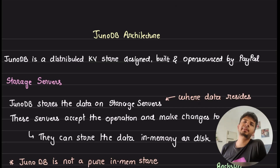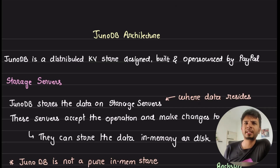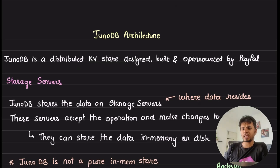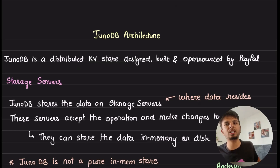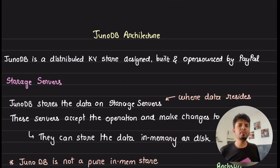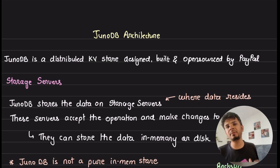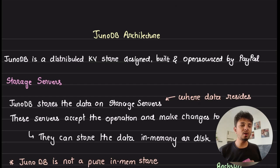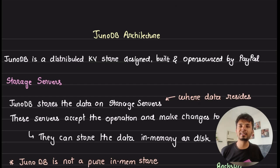PayPal recently open-sourced the key-value database named JunoDB, and I spent a few days going through it to understand its features and guarantees. In a series of videos, I will be going through the database and talking about the key details and design decisions they took while building it. This is the second video of the series, and in this one I will be talking about the architecture of JunoDB, key components of it, and how it is made truly horizontally scalable.